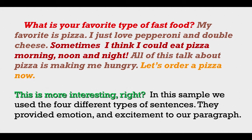What is your favorite type of fast food? My favorite is pizza. I just love pepperoni and double cheese. Sometimes I think I could eat pizza morning, noon, and night. All of this talk about pizza is making me hungry. Let's order a pizza now. This is more interesting, right? In this sample, we used the four types of sentences. They provided emotion and excitement to our paragraph.